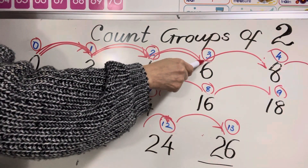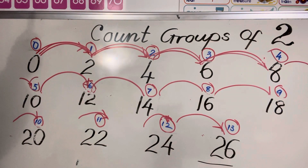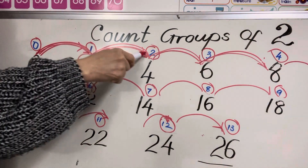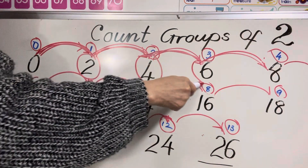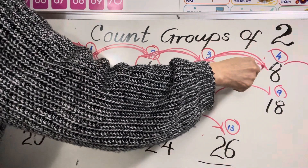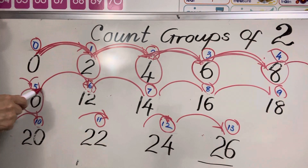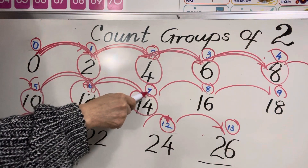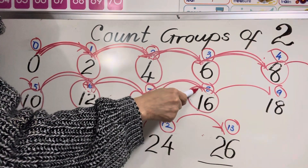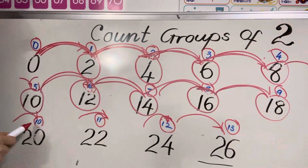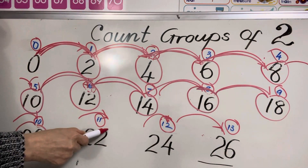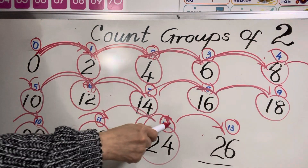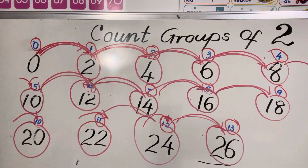Now do you know how to count groups of 2? You start from zero and you jump. Let's do one more time — you have to say the number, I say the group, are you ready? 1 group of 2 — two. 2 groups of 2 — four. 3 groups of 2 — six, loud please! 4 groups of 2 — eight. 5 groups of 2 — ten. 6 groups of 2 — twelve. 7 groups of 2 — fourteen. 8 groups of 2 — sixteen. 9 groups of 2 — eighteen. 10 groups of 2 — twenty. 11 groups of 2 — twenty-two. 12 groups of 2 — twenty-four. And the last one: 13 groups of 2 — twenty-six. Now, do you know how to count groups of 2? Very good!